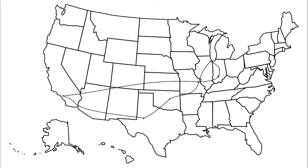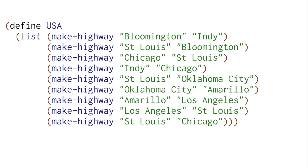Let's think about representing this set of cities and these roads as a map and a data structure in Dr. Racket. Here's a definition for our US highway network, or the small portion that we just saw.